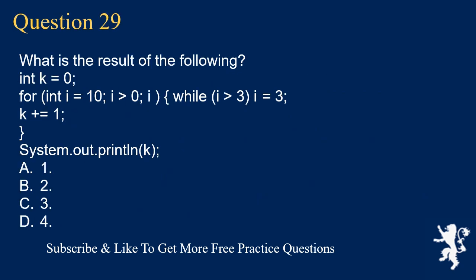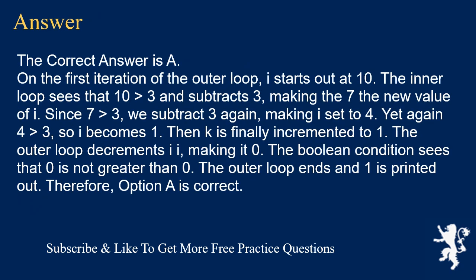Question 29. What is the result of the following? int k = 0; for (int i = 10; i > 0; i--) { while (i > 3) { i -= 3; k += 1; } } System.out.println(k); A. 1. B. 2. C. 3. D. 4. The correct answer is A. On the first iteration of the outer loop, i starts at 10. The inner loop sees 10 > 3 and subtracts 3, making i 7. Since 7 > 3, subtract 3 again, making i 4. Since 4 > 3, i becomes 1 and k is incremented to 1. The outer loop decrements i to 0. The boolean condition sees 0 is not greater than 0, the outer loop ends and 1 is printed. Option A is correct.